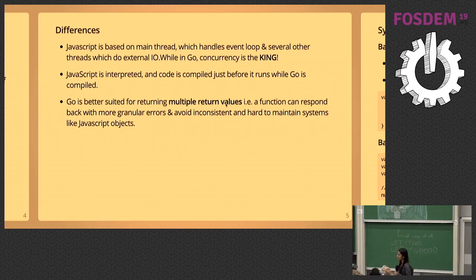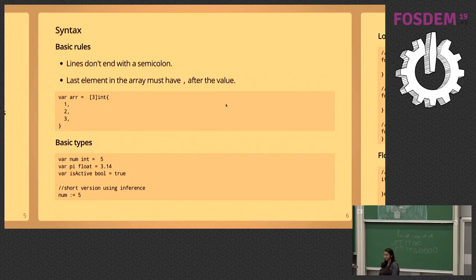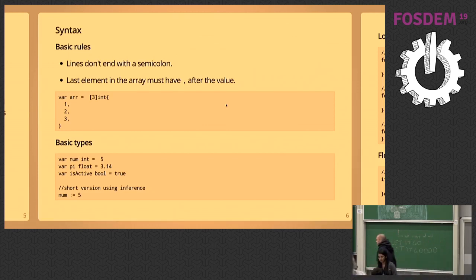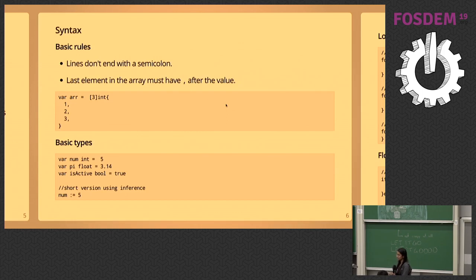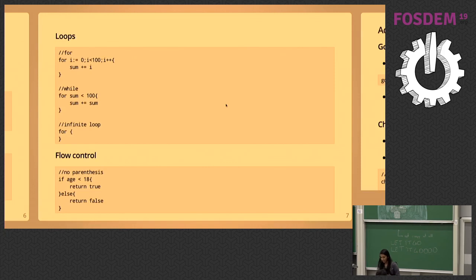In Go, you can have multiple return values — for example, a function can return multiple error codes, which is very consistent and easy to maintain. Basic rules: lines don't end with semicolons. A simple example is declaring an array of size three with integer values 1, 2, and 3 with a comma at the end. Basic types look like 'var num int = 5' — the variable name is declared before the data type. For loops and while loops have no parentheses, and if statements similarly have no parentheses.